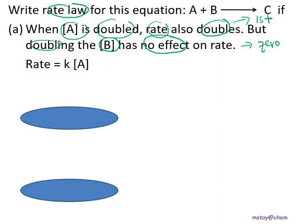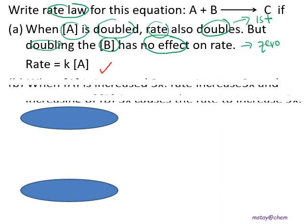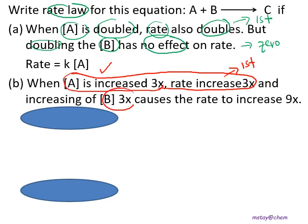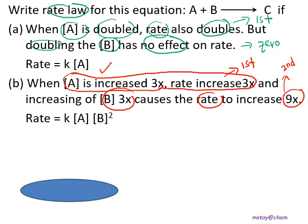So the rate law is: rate = k[A]^1 [B]^0. Since [B]^0 = 1, you can simplify to rate = k[A]. For part B: if concentration A increases 3 times, the rate also triples — first order. If concentration B increases 3 times and the rate increases 9 times, that means second order. So the rate law is: rate = k[A][B]^2.